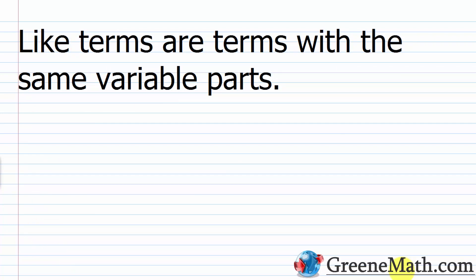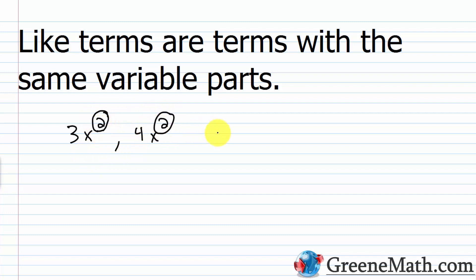When we work with terms, you're going to come across the definition of like terms. Like terms are terms with the same variable parts. This is very simple when you only have one variable. With one variable, let's say we had 3x squared and 4x squared — we have the same variable x and the same exponential power of 2 in both. So these are like terms.